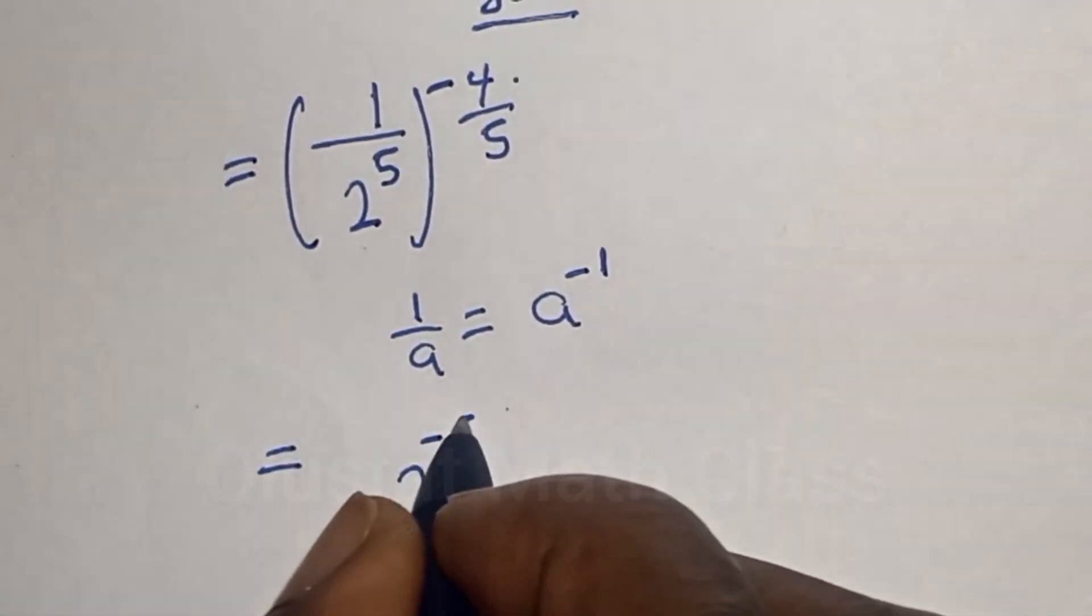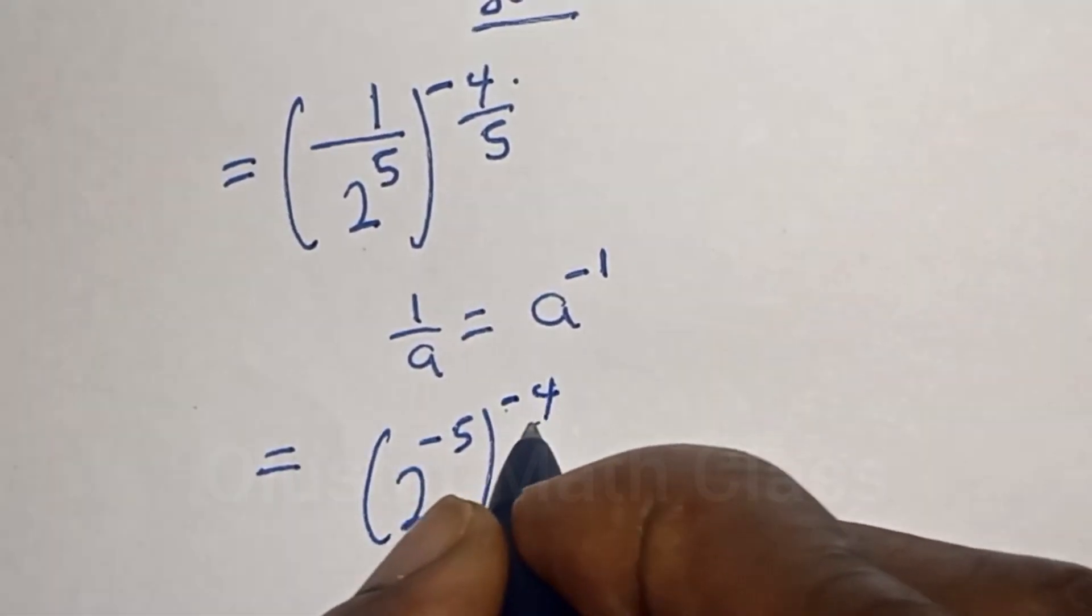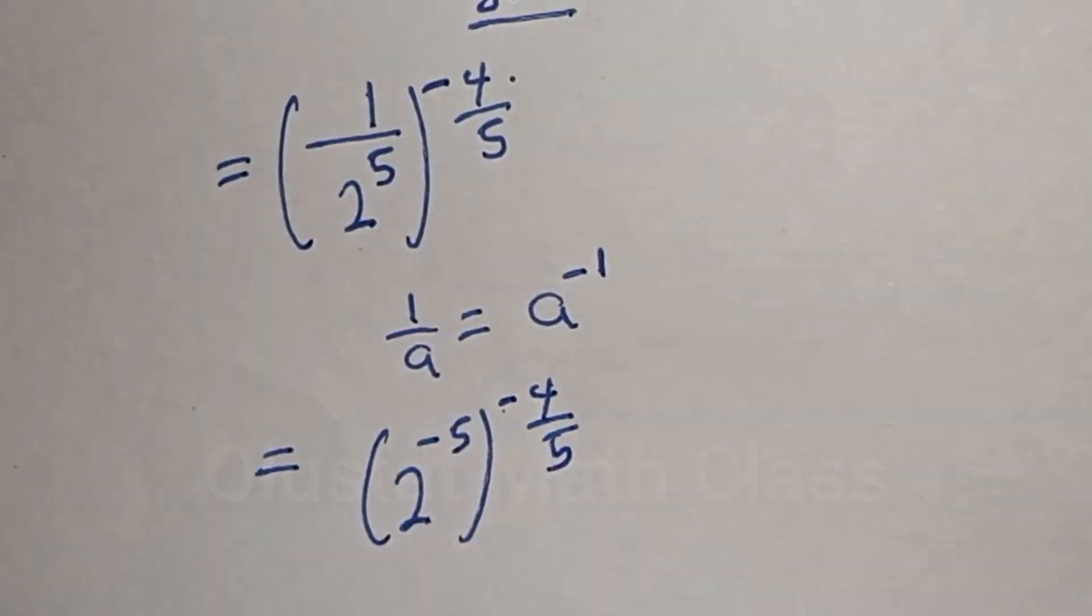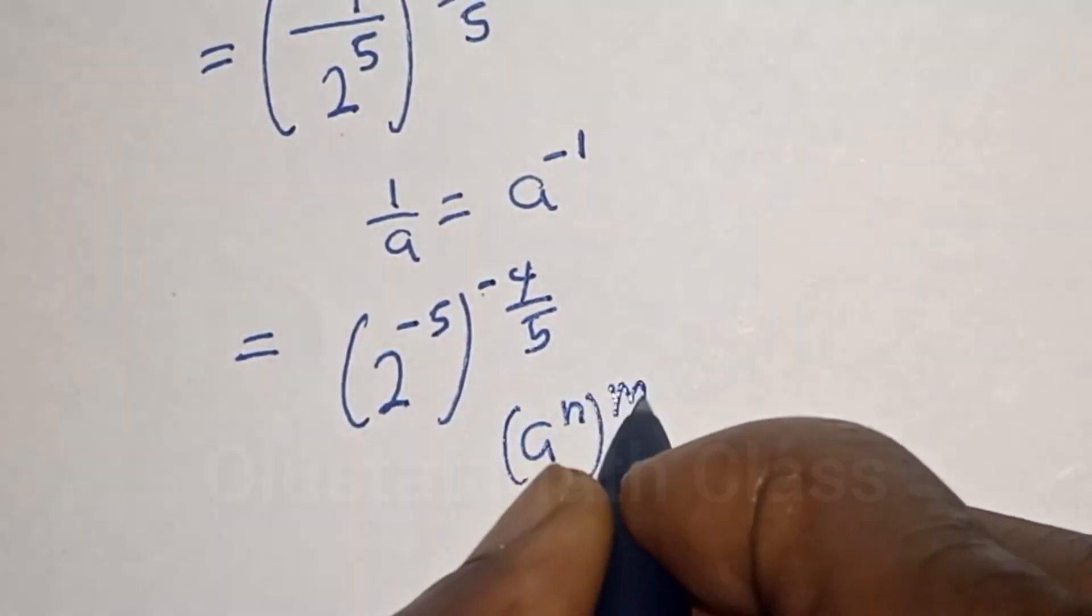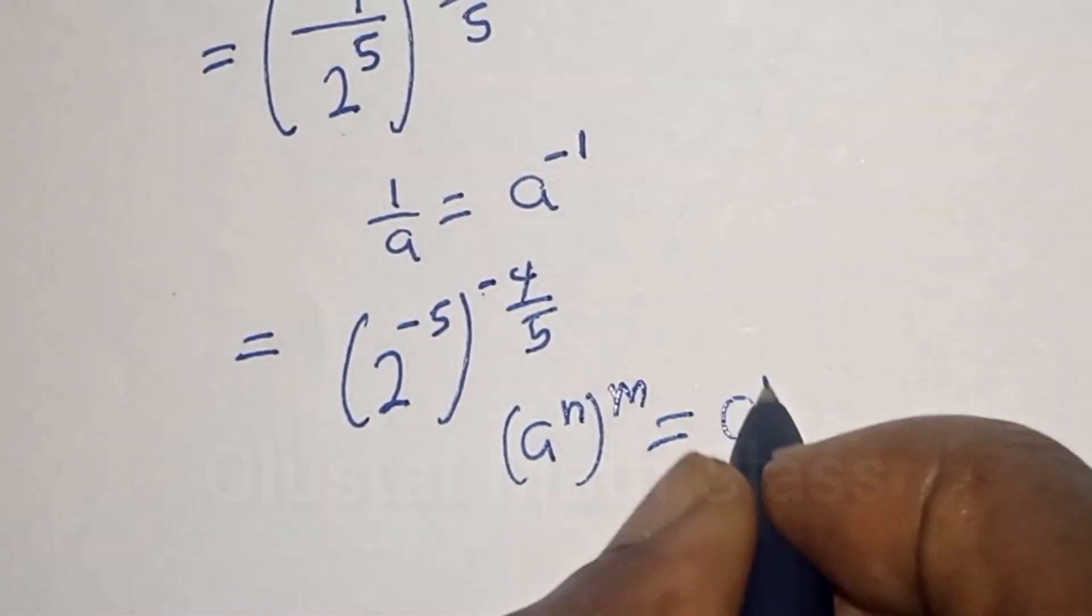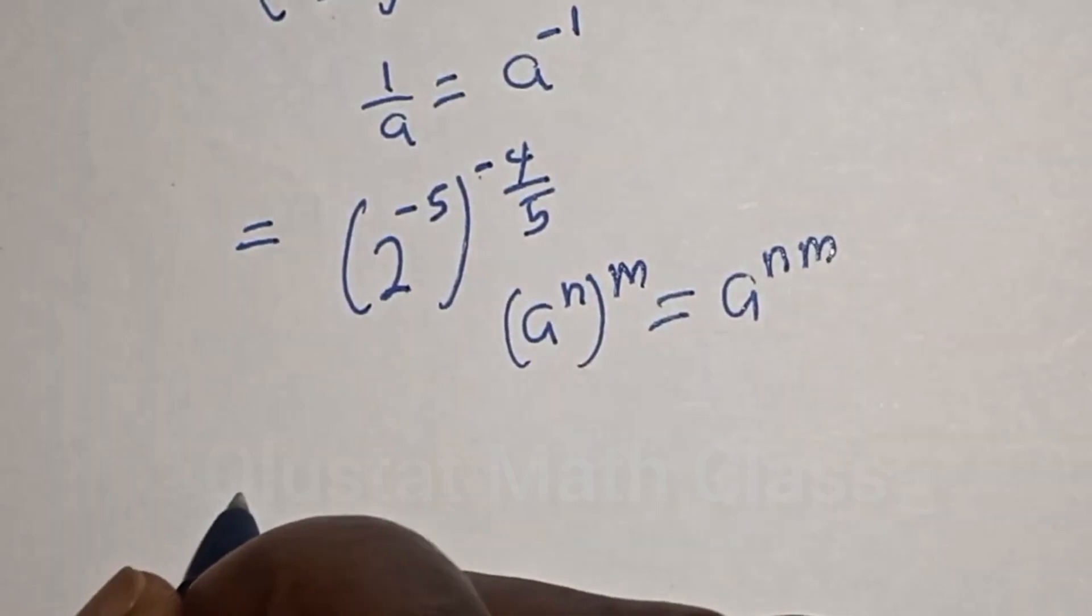Take note of this rule: a raised to power n, raised to power m, is equal to a raised to power n times m. Then this is equal to 2 raised to power minus 5 times minus 4 over 5.